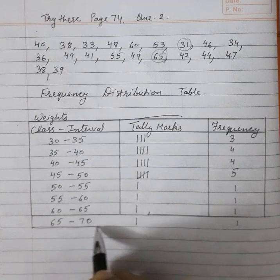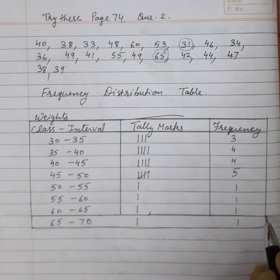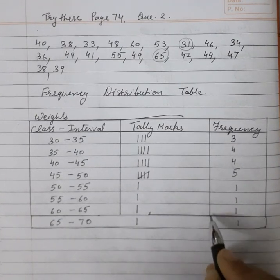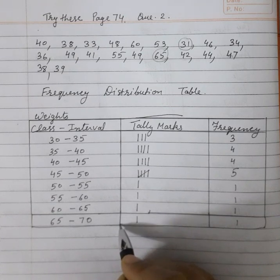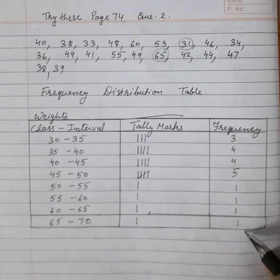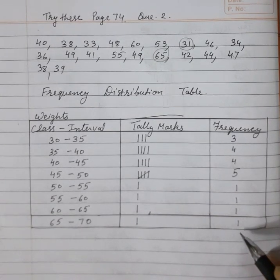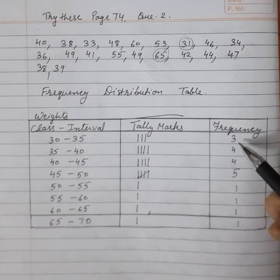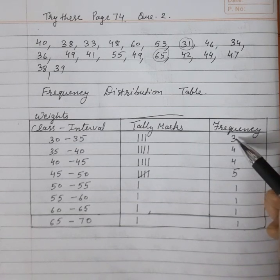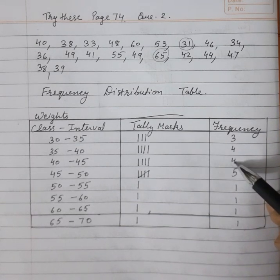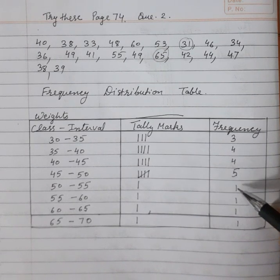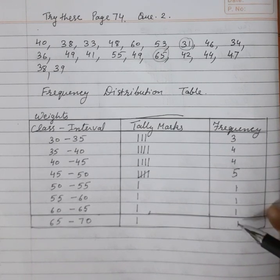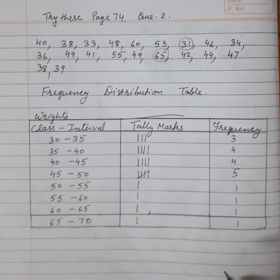Now we will add up the tallies: 3, 4, 4, 5, 1, 1, 1. The table is now complete. Let us add all the frequencies — this should add up to 20 because there are 20 students. Let us cross-check: 3 plus 4 is 7, plus 4 is 11, plus 5 is 16, then 17, 18, 19, 20. The frequency table is correct.